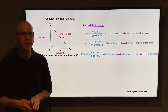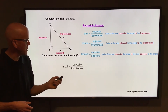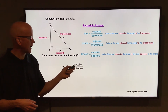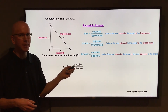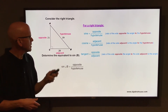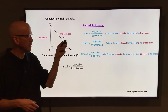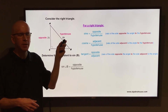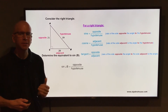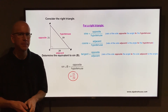Now we're looking for the sine of B. The sine of B is the side opposite angle B over the hypotenuse. Opposite angle B is 21, and the hypotenuse is 29, so the sine of angle B is 21 over 29.